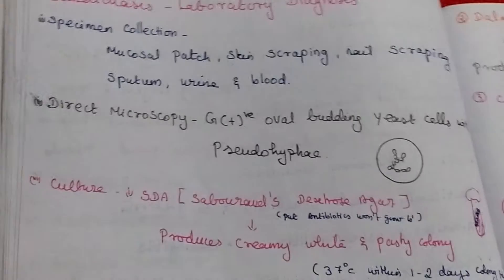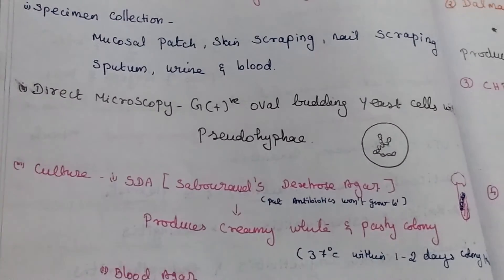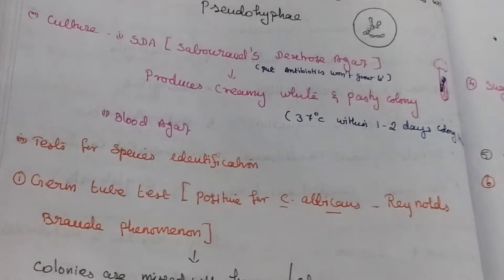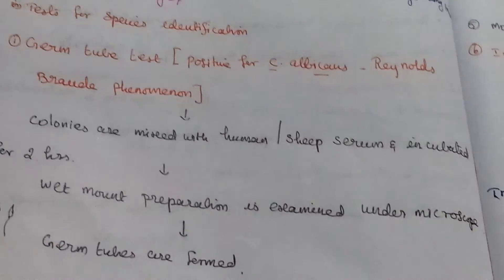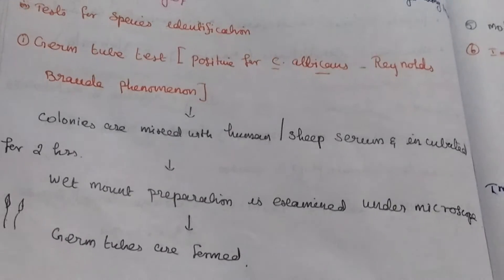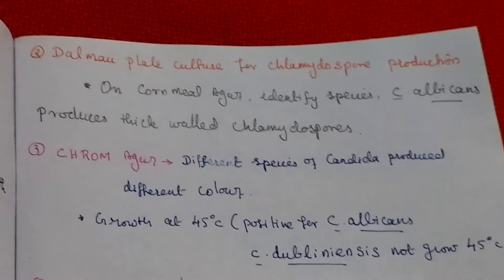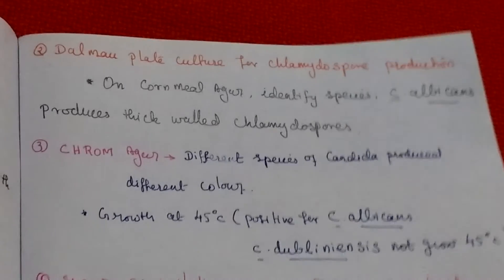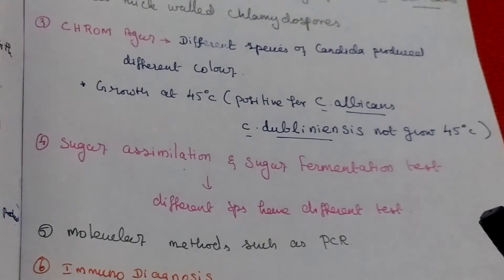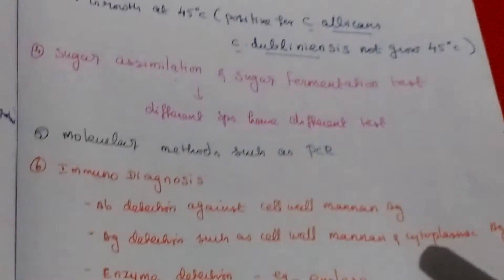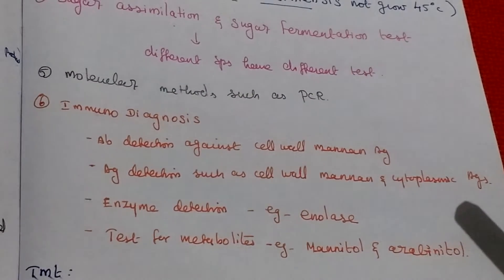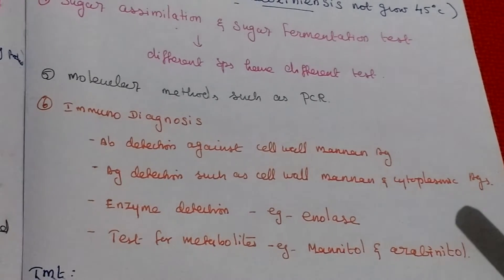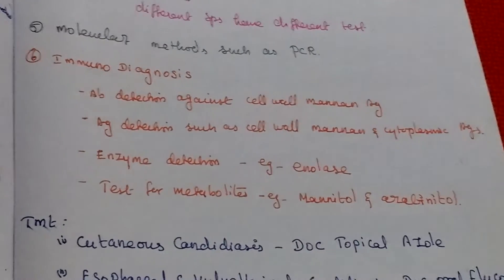In summary, laboratory diagnosis involves: specimen collection based on site, direct microscopy, culturing on SDA, and tests for species identification — including the germ tube test (germ tubes form in Candida albicans within 2 hours on wet mount preparation), Dalmo plate culture using cornmeal agar, chrome agar, sugar assimilation and fermentation tests, molecular methods using PCR, and immunodiagnosis including antibody detection against cell wall mannan, antigen detection, enzyme detection, and tests for metabolites.